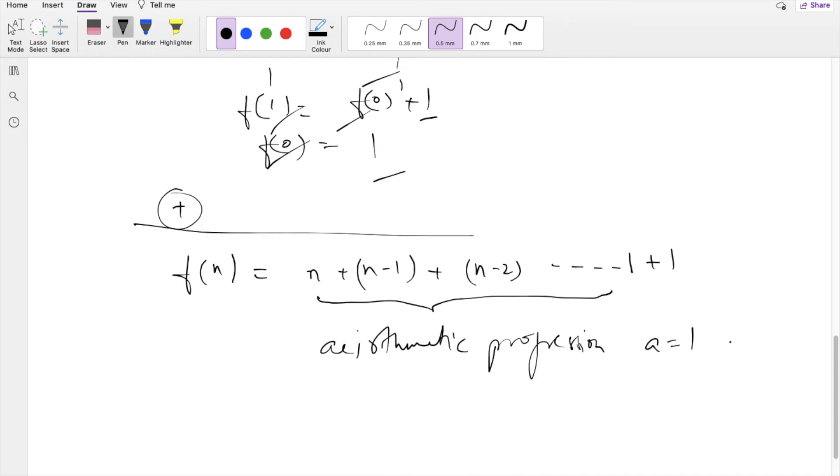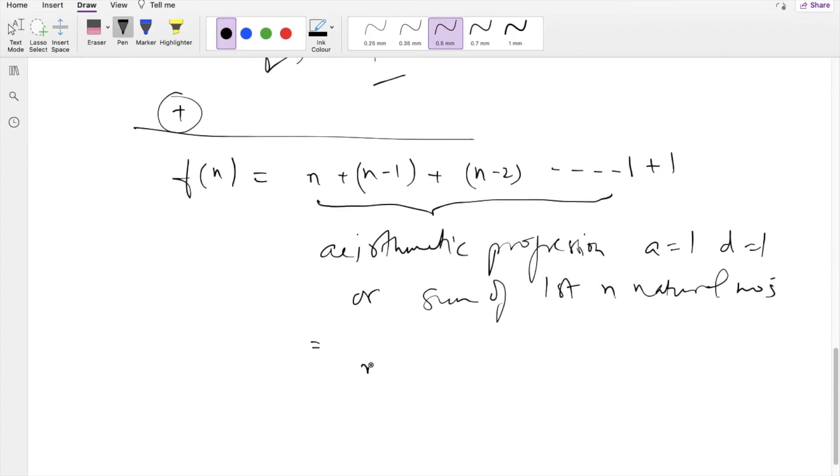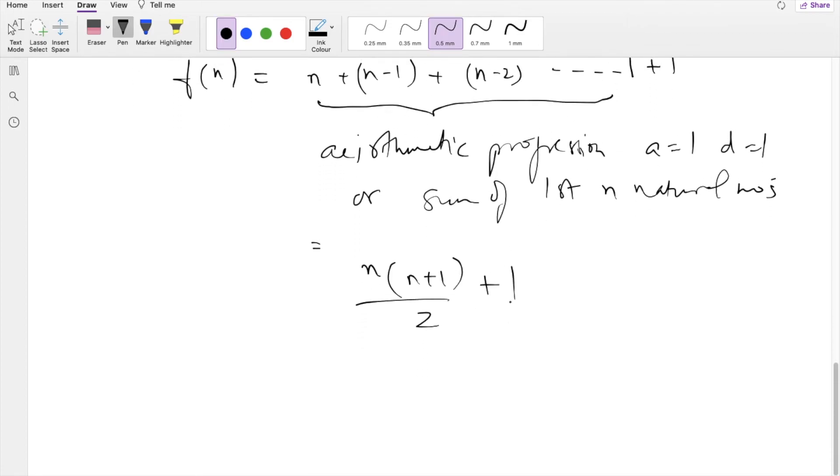An arithmetic progression with a as 1 and common difference as 1, or sum of first n natural numbers, which is equal to n(n+1)/2 + 1, which comes out to be (n² + n + 2)/2.